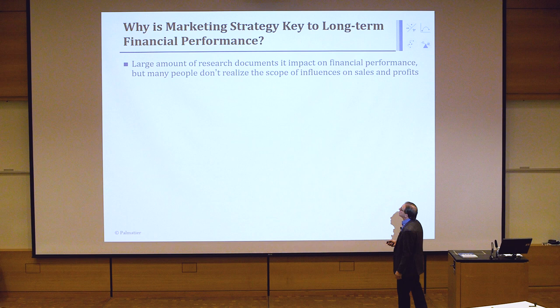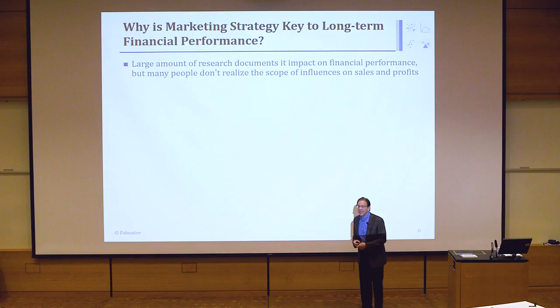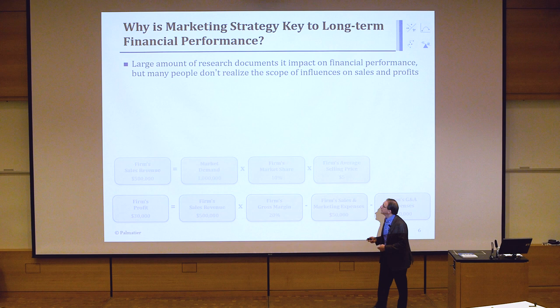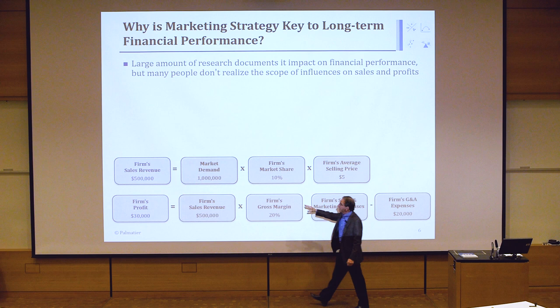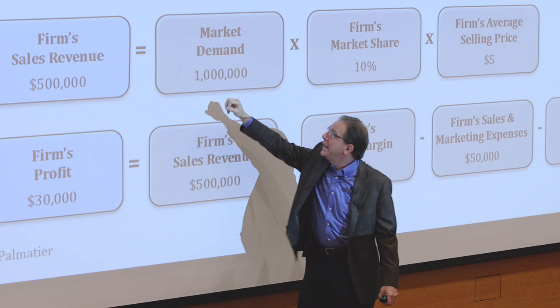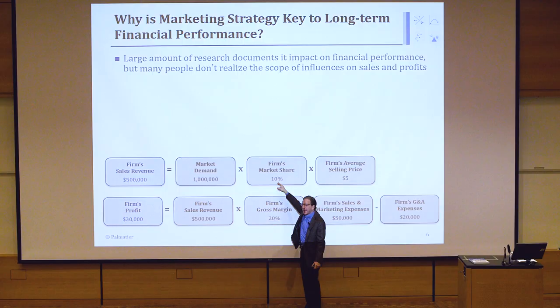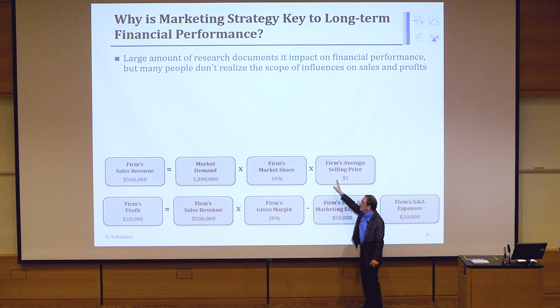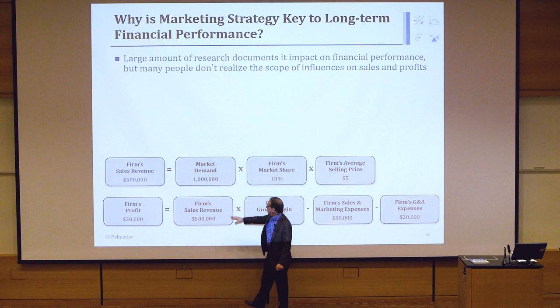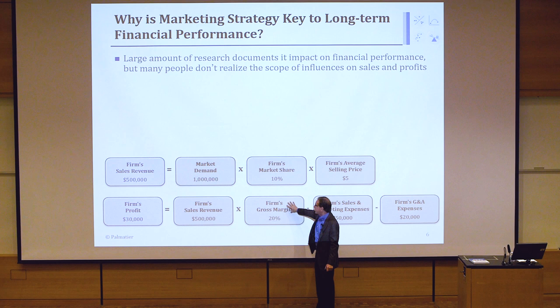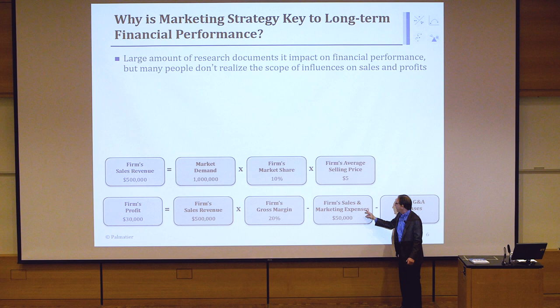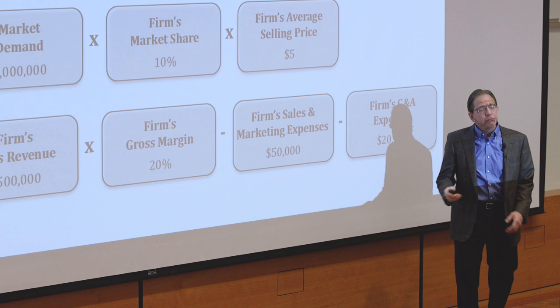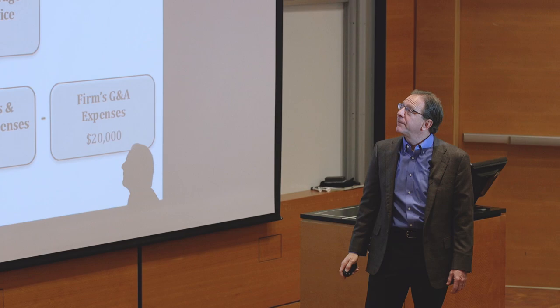Why bother focusing on marketing strategy? Does it really impact firm performance? Using a chain ratio: a firm's sales equal market demand times market share times average selling price. For gross profit, we take firm sales, multiply by gross margin percentage, and subtract the cost of sales, marketing expense, and other firm expenses — the SG&A. Marketing affects multiple parts of this chain ratio.